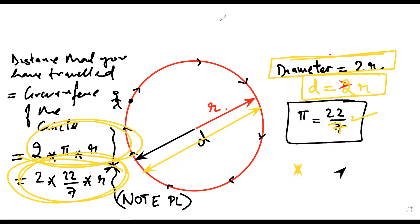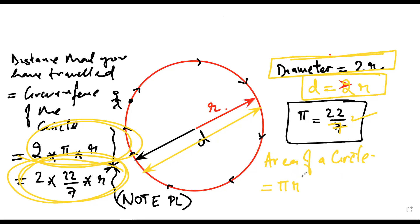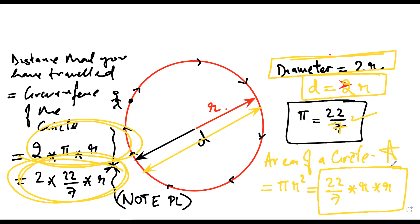There is another simple formula you need to remember for a circle, and that is the area of a circle. The area of a circle is πr², that is 22 by 7 into r into r. Please note down all the formulas.